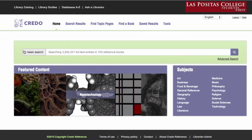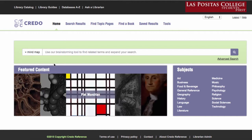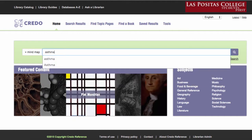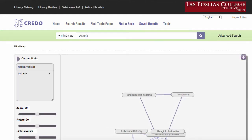Use the pull-down menu on the left side of the search bar to select Mind Map. Type in your broad topic or what you want at the center of your concept map and click on the magnifying glass.